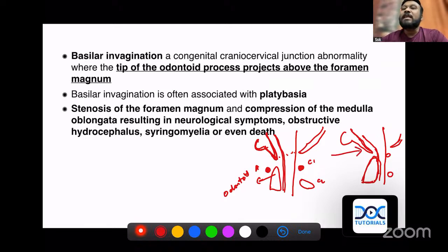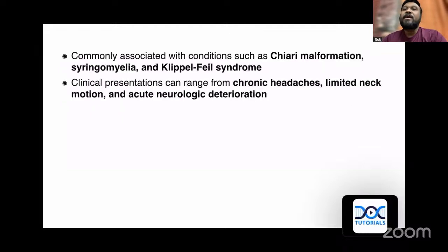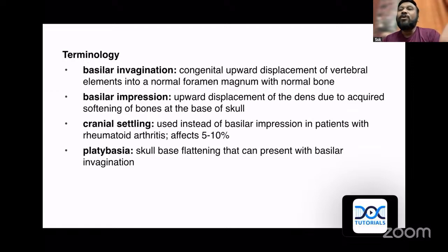Platybasia is the flattening of the skull base, where the normally acute clivus angle becomes more obtuse. What it ultimately causes is stenosis of the foramen magnum, compression of the medulla oblongata, resulting in neurological symptoms, obstructive hydrocephalus, syringomyelia, and even death due to raised ICP. It is commonly associated with Chiari malformation, syringomyelia, and Klippel-Feil syndrome. Patients present with chronic headaches, limited neck mobility, or even acute neurological deterioration. Regarding the four terminologies: basilar invagination is the upward displacement of vertebral elements — the C2 odontoid process — into the normal foramen magnum.